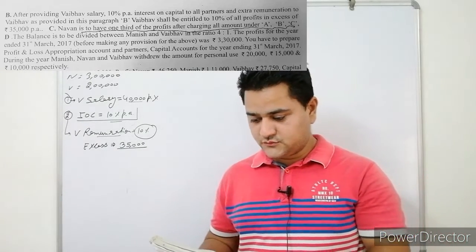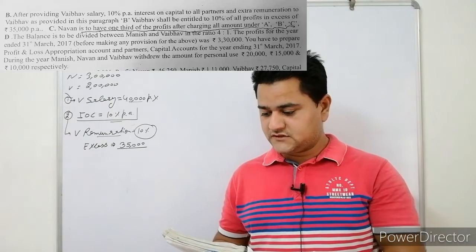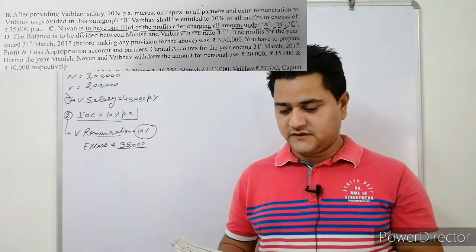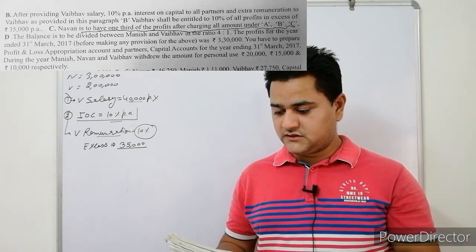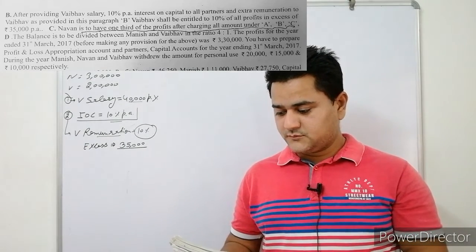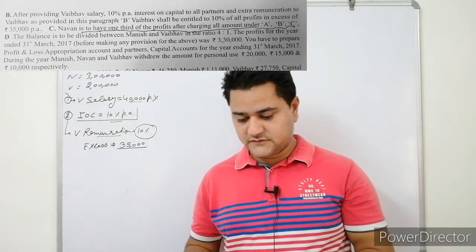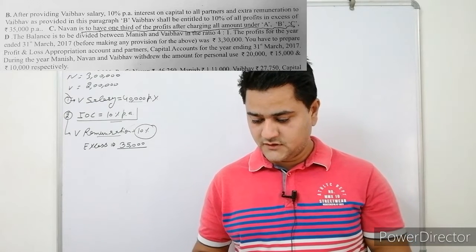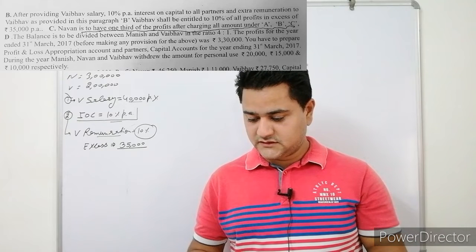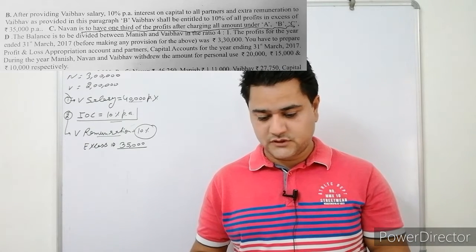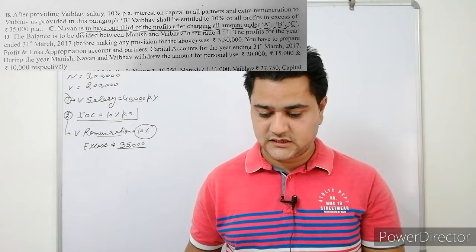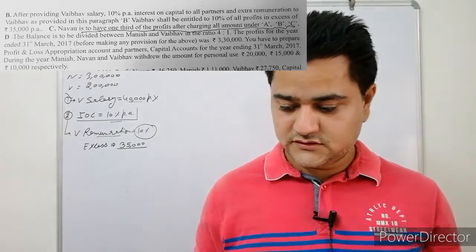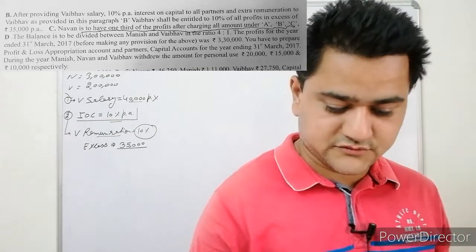Point C: Navan is to have one-third of all profit after charging all amounts under A, B and C. Point D: The balance is to be divided between Manish and Weibo in the ratio 4:1. The profit for the year ending 31st March 2017, before making any provision, is Rs.3,30,000.